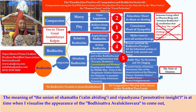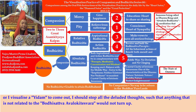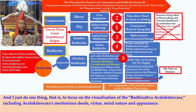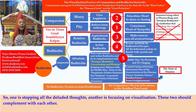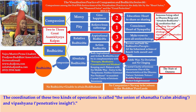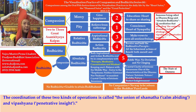The meaning of the union of shamatha, calm abiding, and vipasshyana, penetrative insight, is that when I visualize the appearance of Bodhisattva Avalokitesvara or a yidam to come out, I should stop all the deluded thoughts such that anything not related to the Bodhisattva Avalokitesvara would not turn up, and I just focus on the visualization — including Avalokitesvara's meritorious deeds, virtue, mind nature, and appearance. One is stopping all deluded thoughts, the other is focusing on visualization. These two complement each other. The coordination of these two kinds of operations is called the union of shamatha and vipasshyana.